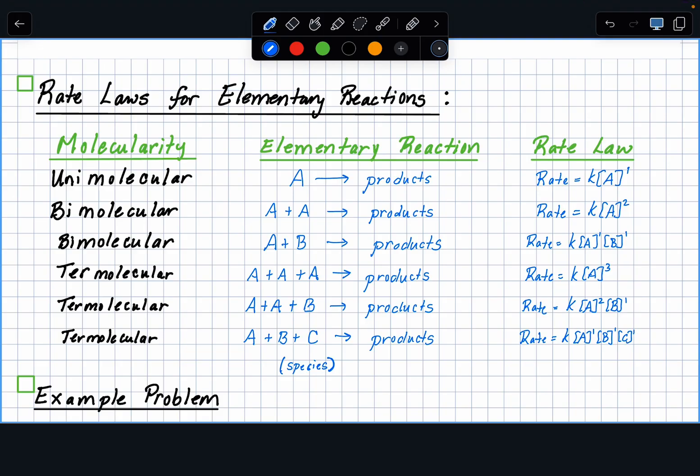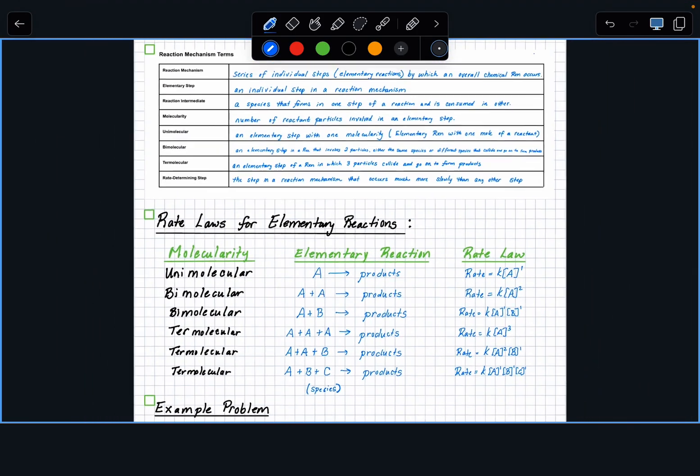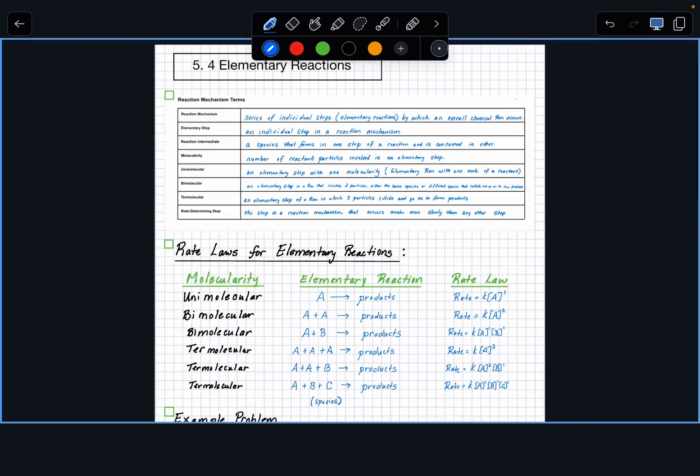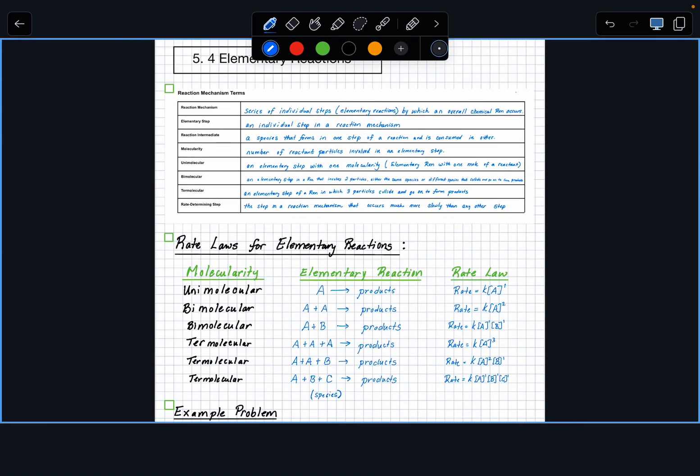Last but not least, you have this last one, which is rate is going to equal K. And again, these are only for elementary steps. And then it's first order with respect to all of them. And then it would be third order overall. So again, we would say this is third order overall, but first order with respect to each one. I'm just going to zoom back out just to kind of see that we have the terms and we have the table. Now we got to move on to an example problem to keep this short and sweet to the point.